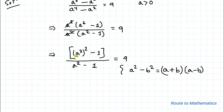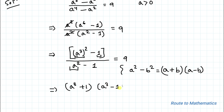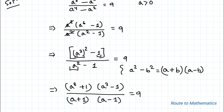Here I will consider a as a³ and b as 1. So this gives us (a³ + 1)(a³ − 1) divided by (a + 1)(a − 1) equals 9.